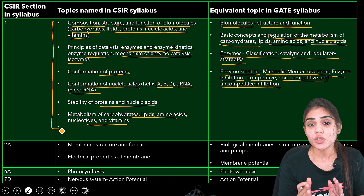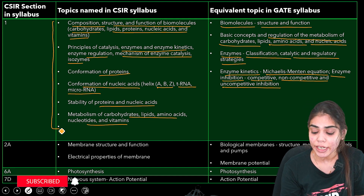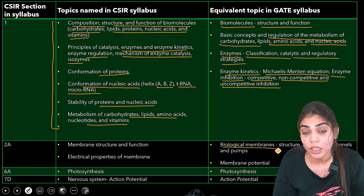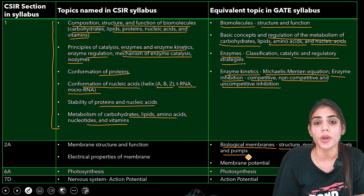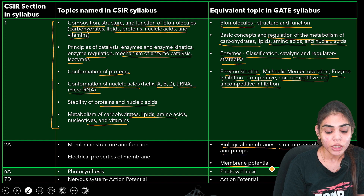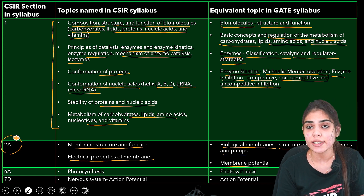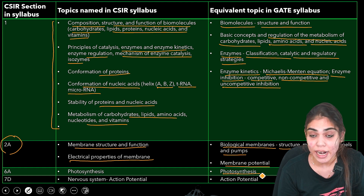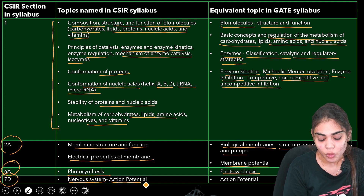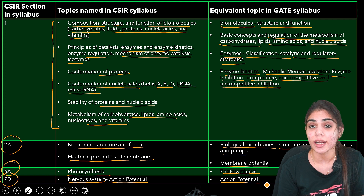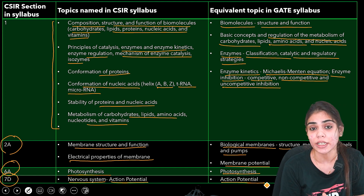If you see CSIR Unit 1, that is Biochemistry, it includes all the biomolecules as well as their metabolism, so learning these topics for CSIR will be a great help when you write the GATE Biotechnology exam. GATE Biotechnology biochemistry also includes biological membranes — plasma membrane structure, membrane channels, and pumps — along with the concept of membrane potential, which is equivalent to membrane structure and function as well as electrical properties of membrane in CSIR NET. Also, photosynthesis is equivalent to the 6A part of CSIR, and the nervous system action potential is equivalent to action potential under GATE Biotechnology biochemistry.